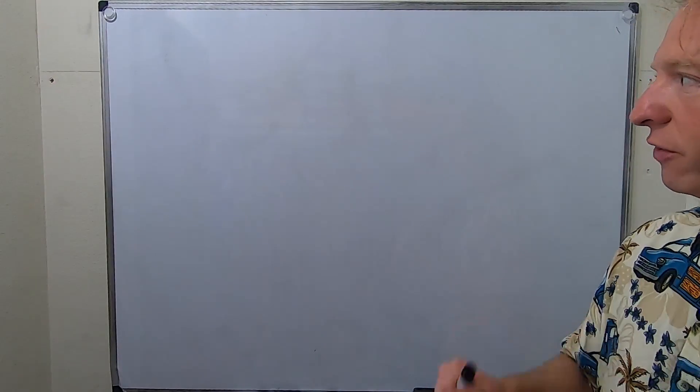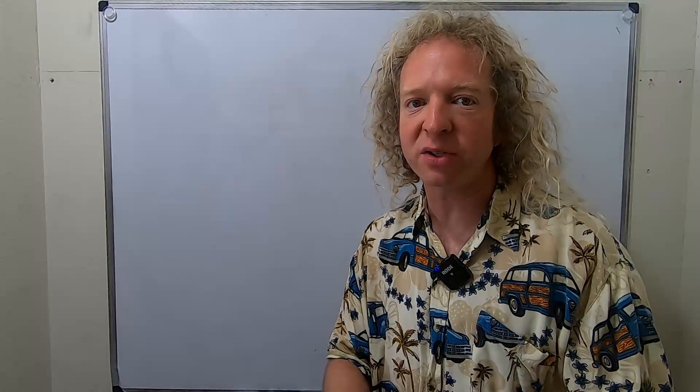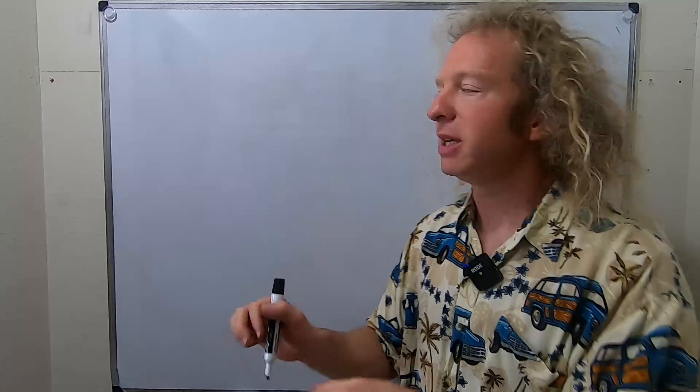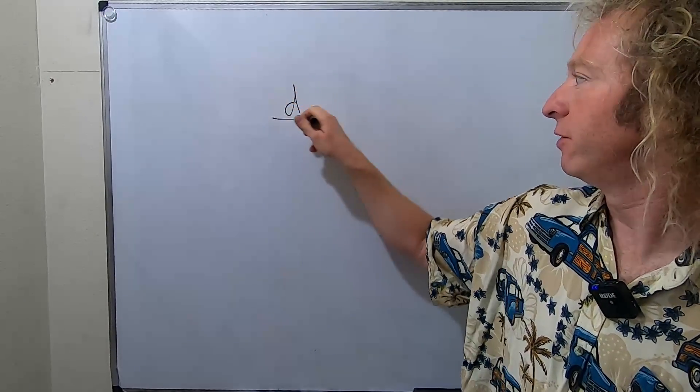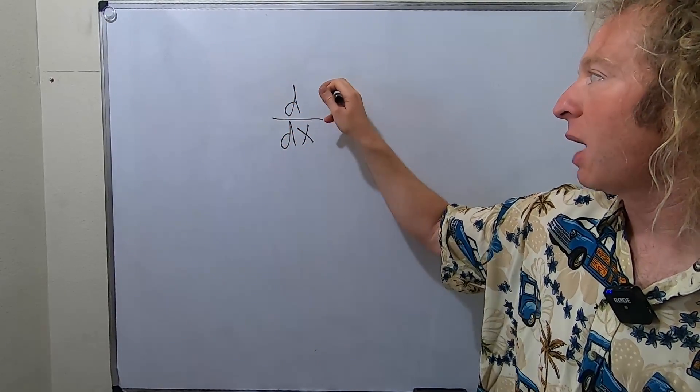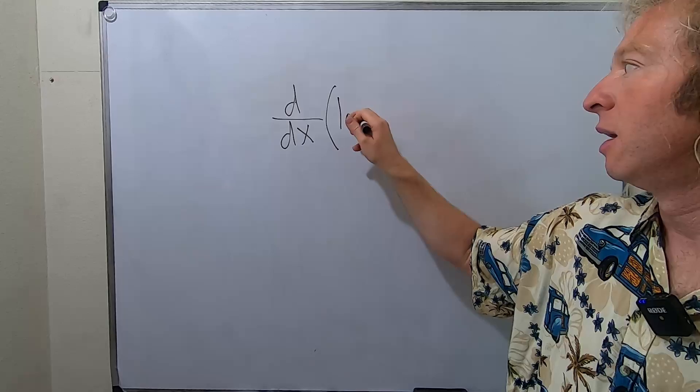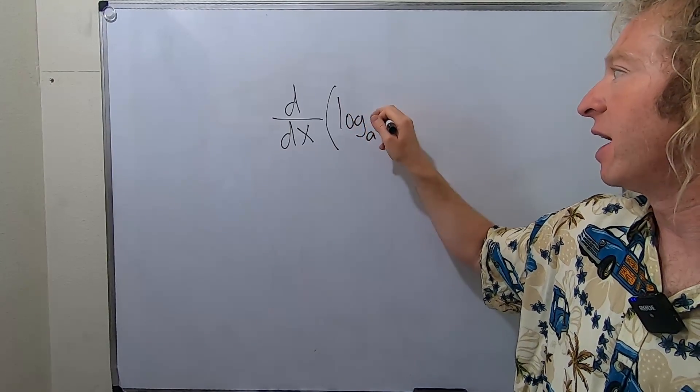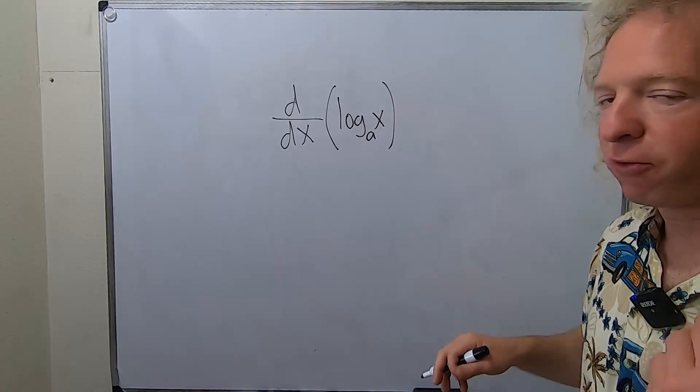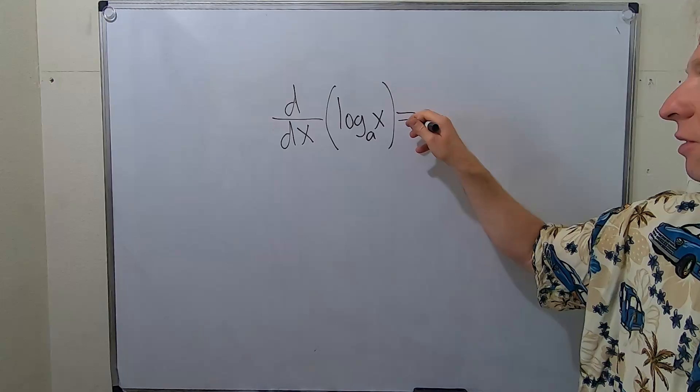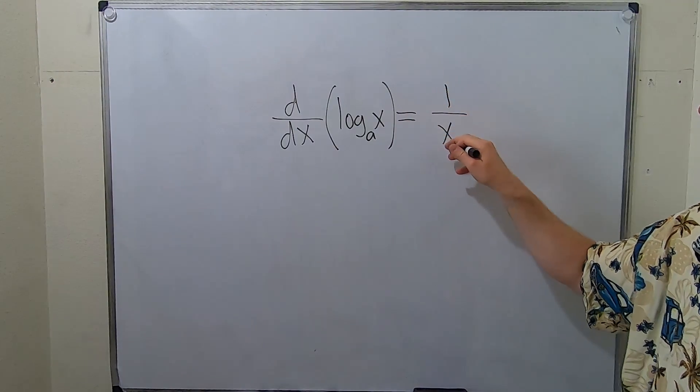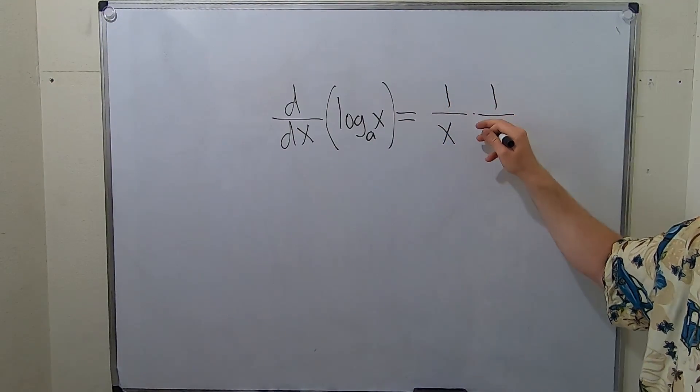In this video, I want to show you a derivative formula for logs with bases other than e. Let's say we're taking the derivative with respect to x, and we have log base a of x. The formula for this is 1 over x times 1 over the natural log of a.